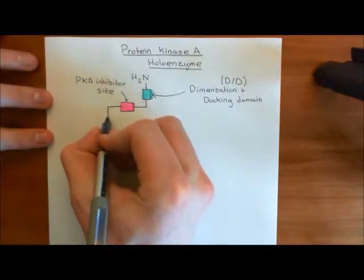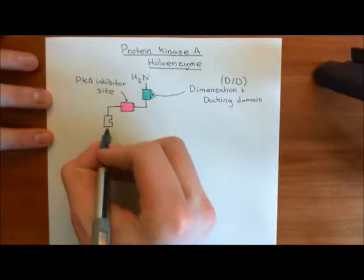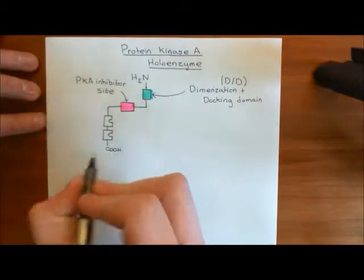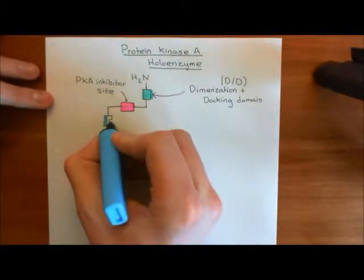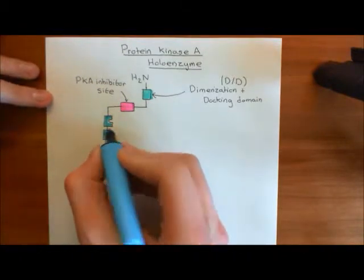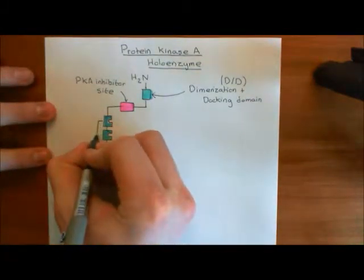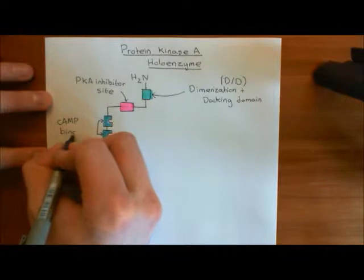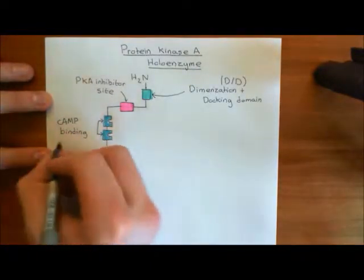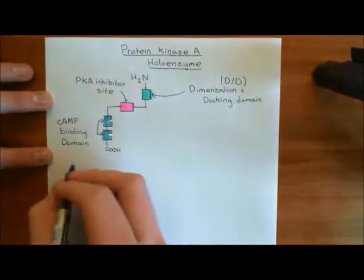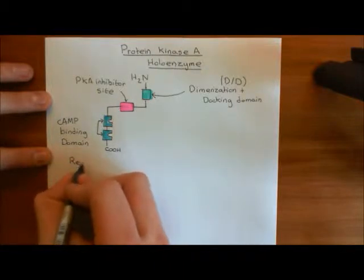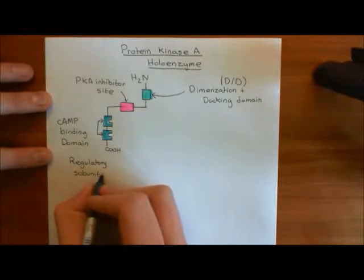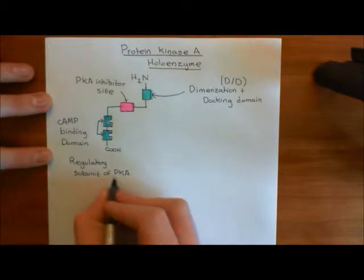After the protein kinase A inhibitor site, you then have two domains which are involved in binding cyclic AMP, and these are in tandem. So you have one cyclic AMP binding domain followed by the next, and then the carboxylic acid terminus. I'll color in these two cyclic AMP binding domains in blue. Each one of them has a single binding site for a cyclic AMP molecule, so one cyclic AMP will bind here and another cyclic AMP will bind here. This completes the important domain structure of a regulatory subunit of protein kinase A, often abbreviated to PKA.